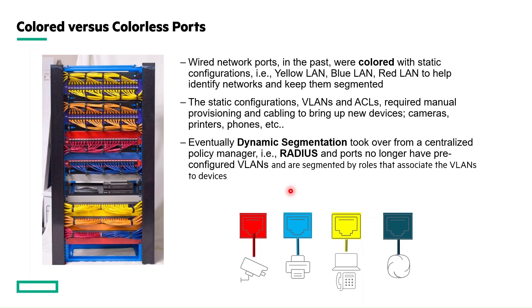Let's start with the overview and understand the difference between colored and colorless ports. The wired network ports in the past were colored with static configurations like LORLAN, BLULAN, REDLAN to help identify networks and keep them segmented.